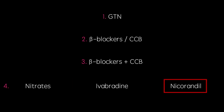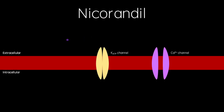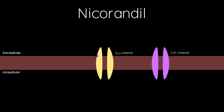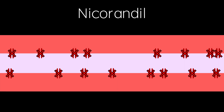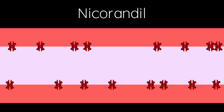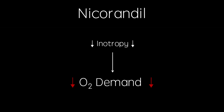Nicorandil is an ATP-sensitive potassium channel activator. This drug opens K-ATP channels in vascular smooth muscle cells, causing hyperpolarisation of the cell membrane, and therefore closure of the voltage-gated calcium channels. This decreases the calcium concentration in the cytoplasm, and therefore induces vasodilatation. This reduces inotropy, and therefore reduces cardiac oxygen demand.